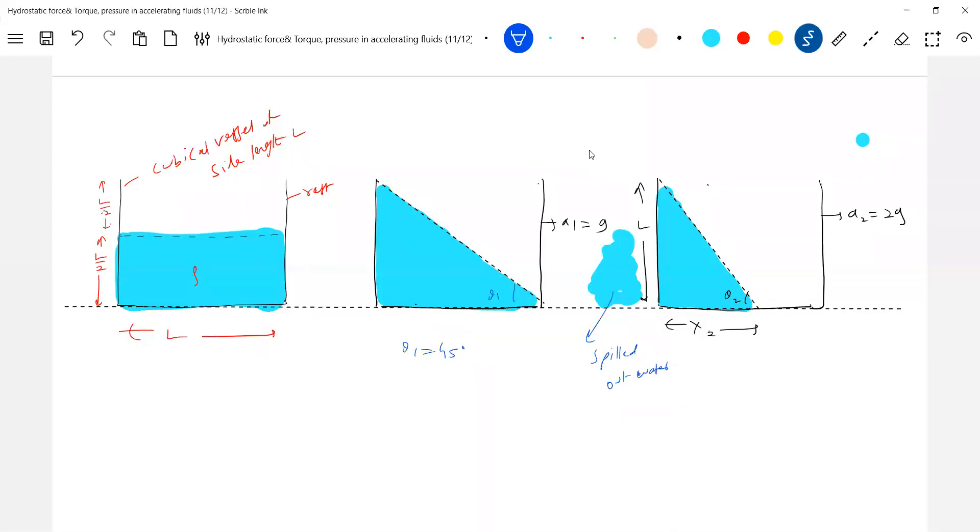So earlier what was the volume? V naught. Now v naught - what is the volume? It will be v2. Can we calculate how much water got spilled out? Volume of the water.